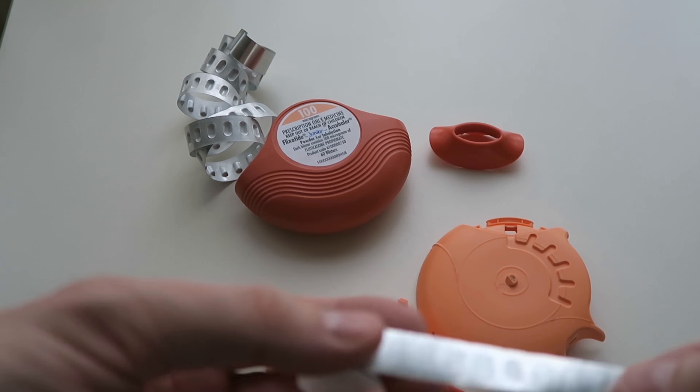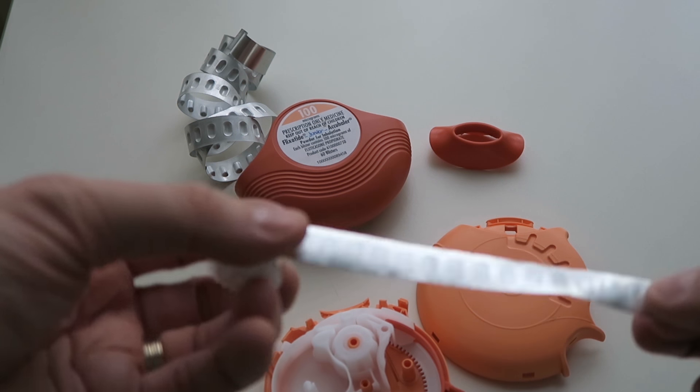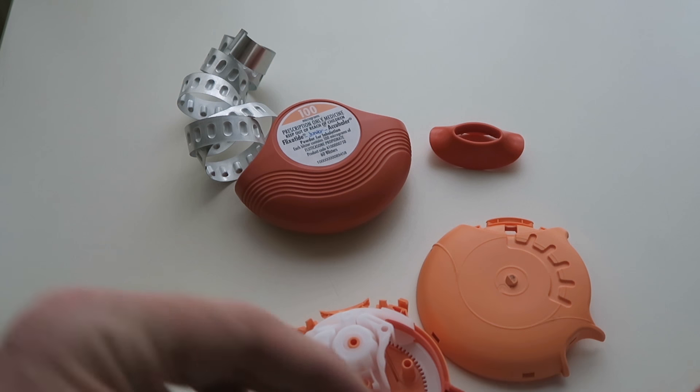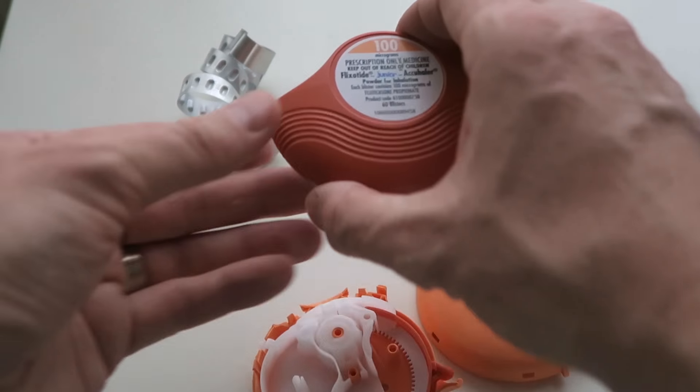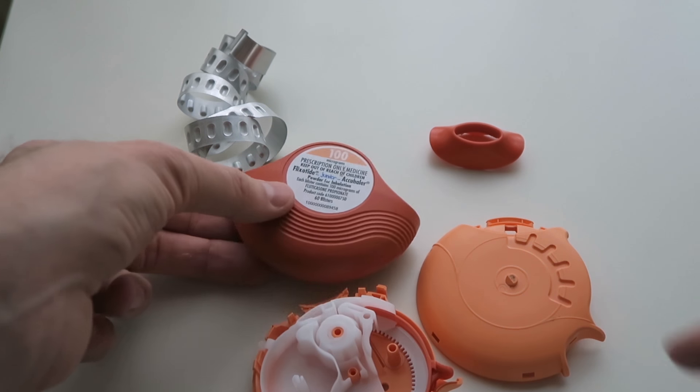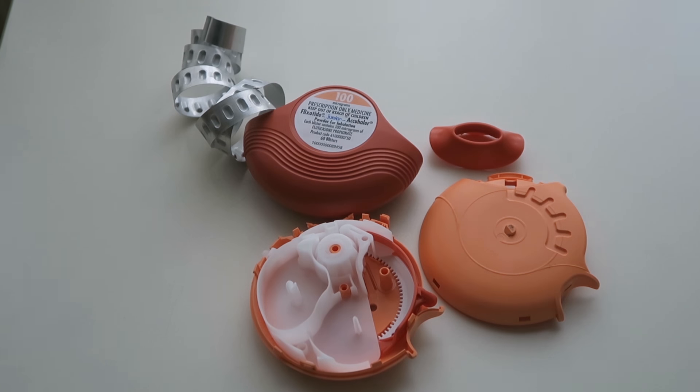So yeah, you can see just little powder residue on the flat bit that would have sealed it up. So there you have it, insides of an AccuHaler delivery device.